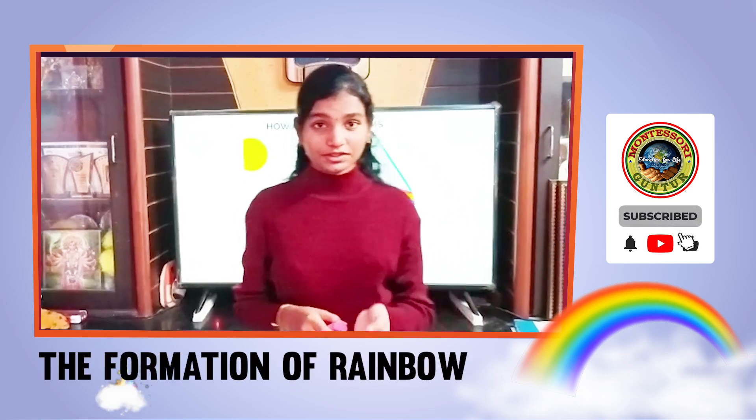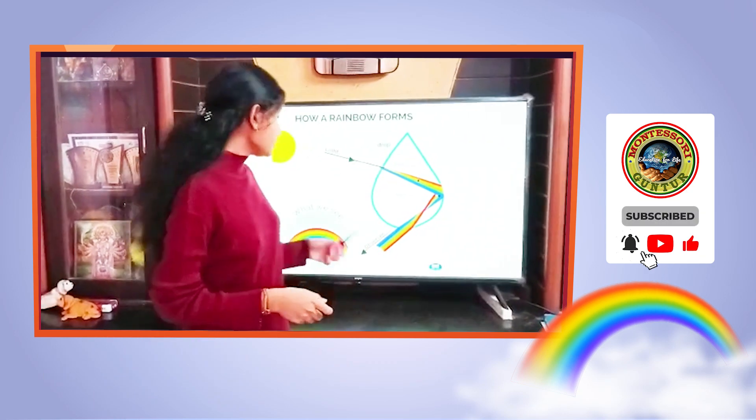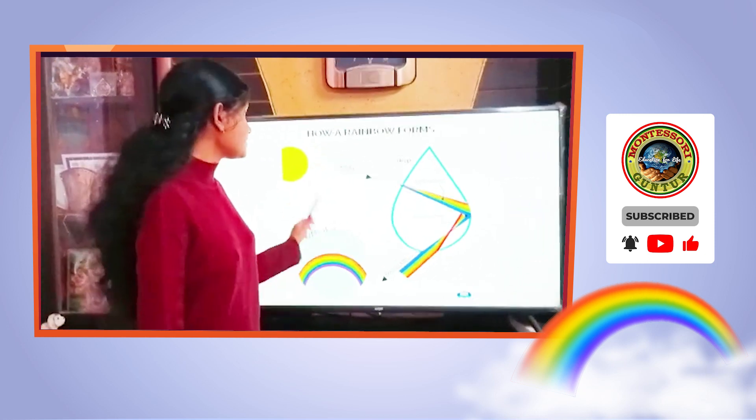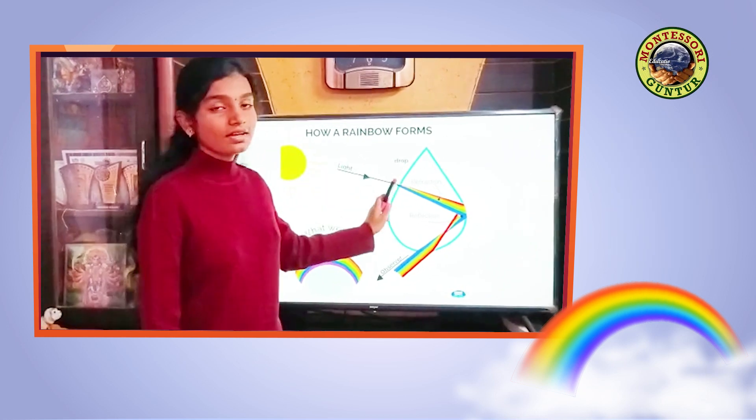Now I would like to explain to you about the formation of rainbow. Rainbow is a natural spectrum. It is in the shape of a glow. It appears when the sun shines on the raindrop.